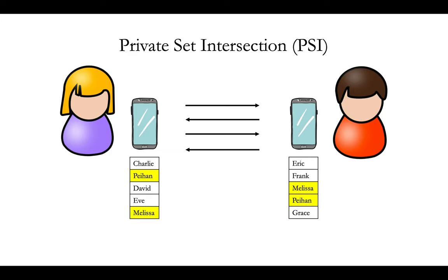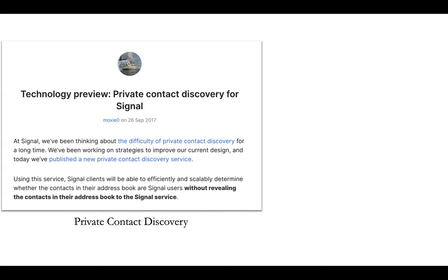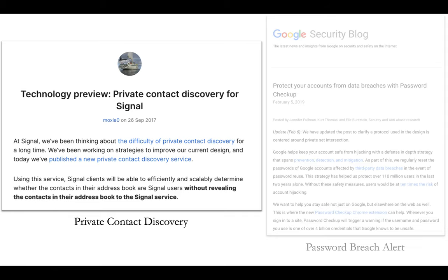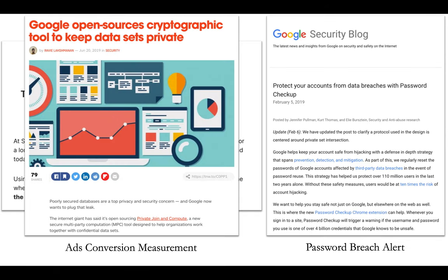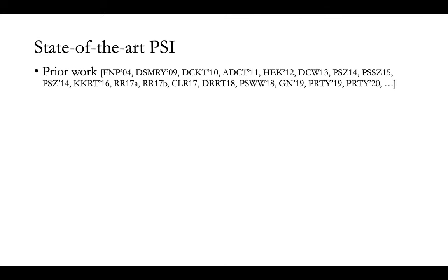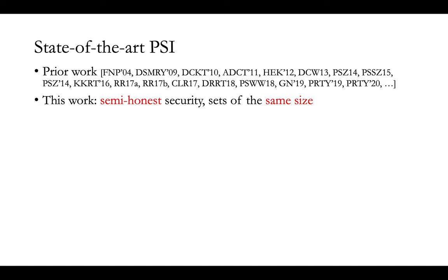PSI is a special case of secure two-party computation. Although the functionality that they want to jointly compute is very simple, PSI has found a lot of applications in practice, for example, private contact discovery, password breach alert, ads conversion measurement, and many more. There has been a lot of work on PSI in different scenarios and settings, but in this work, we will focus on the semi-honest security model where both parties follow the protocol honestly but are curious about the other party's input, and we assume the two sets have roughly the same size.